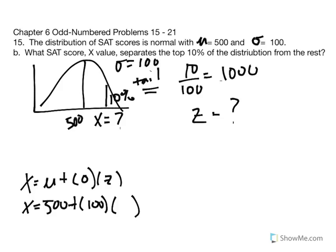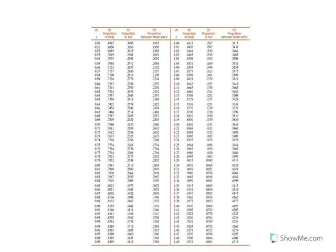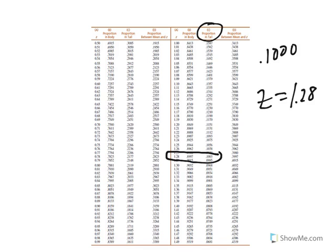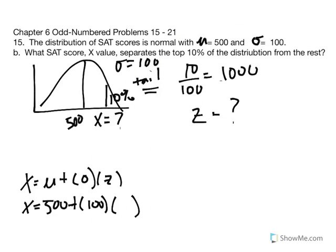We look in the tail for the Z score that separates the top 10% of the distribution. Looking for a proportion of 0.1000 in the tail, moving down we find a proportion of 0.1003 — that's the closest we'll get — and the Z is 1.28. We'll use that in our equation. Z is equal to 1.28, so our goal is to find the X value that represents 1.28 standard deviation units above the mean.